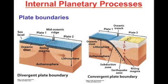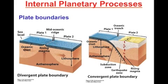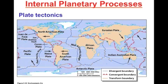A convergent plate boundary is when two plates are meeting, and one of those plates sometimes descends under the other in a process known as subduction. This process of subduction can sometimes result in the formation of mountain ranges like the Himalayas, which occur along the border between India and Asia — where mountains like Mount Everest are located.